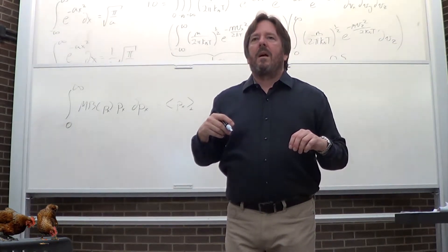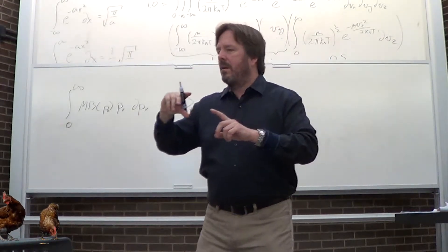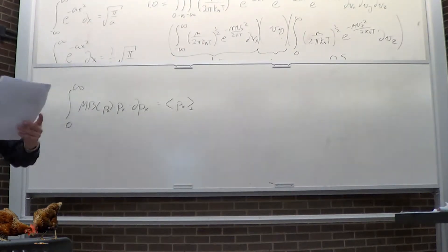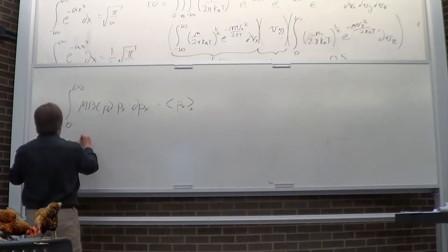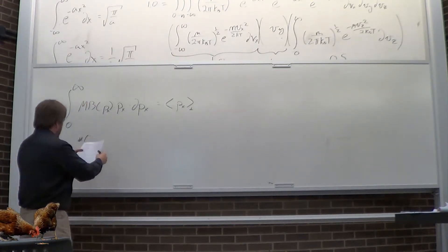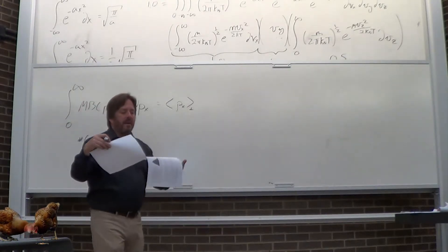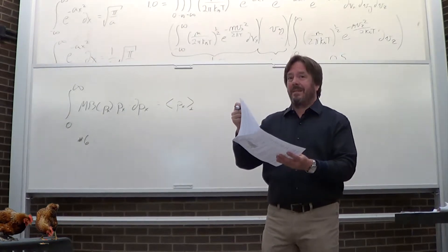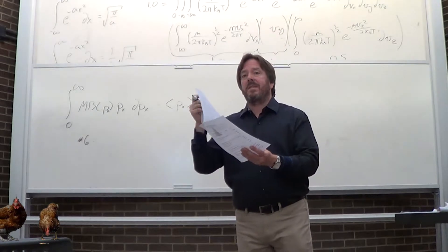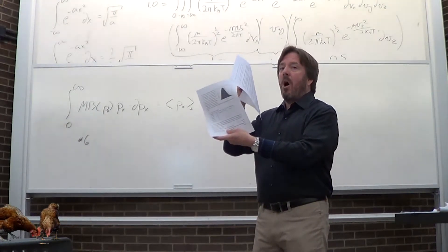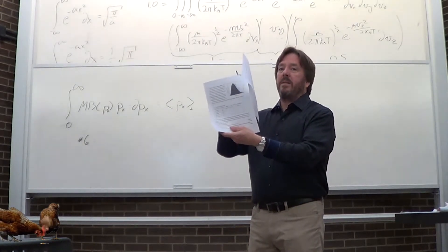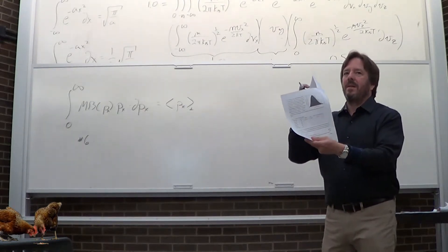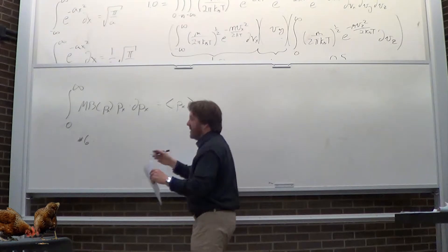Student question: I got an answer for number 6 but it doesn't correlate with the last part of seven. Number 7 is an approximation — the purpose of number 7 is to help you understand what an integral is. Number 7 will give you number 6's answer only if those rectangles are infinitely small and you add up an infinite number of them. The answers shouldn't be that far off — if they're wildly different, something went wrong.